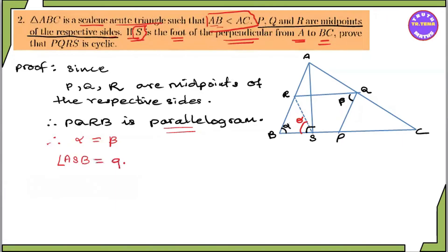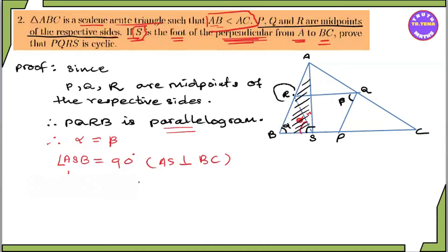ASB is 90 degrees. AS is perpendicular to BC. In triangle ASB, this is a right triangle. The hypotenuse is AB, and the relevant sides are A and B.